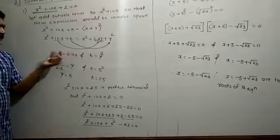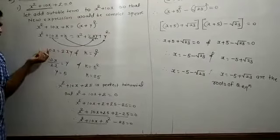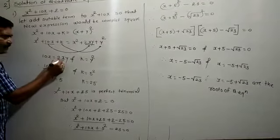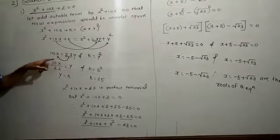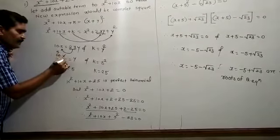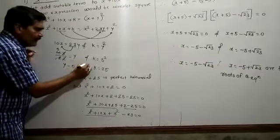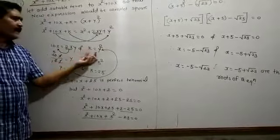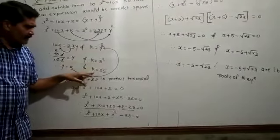From 10x equals 2xy, transpose 2x to the other side — multiplication becomes division — giving 10x divided by 2x equals y. Cancel the x terms: 10 divided by 2 equals 5, so y equals 5. Then k equals y squared equals 5 squared, so k equals 25.